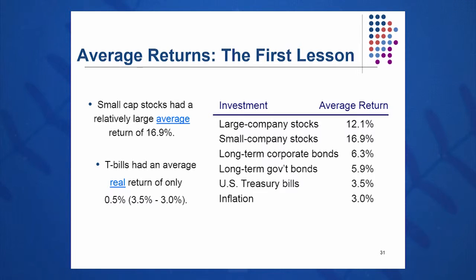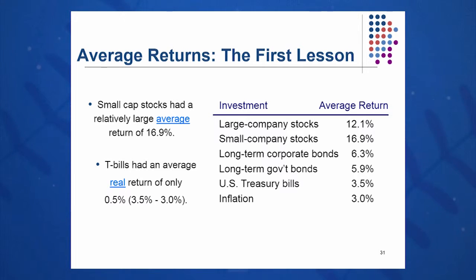Small company stocks will get you almost 17% on average. However, are you willing to take that volatility? Some years you might see these stocks go up 30, 40, or 50%. The next year they might go down 30, 40, or 50%. So these are wildly volatile — it proves the point: high risk, high return.